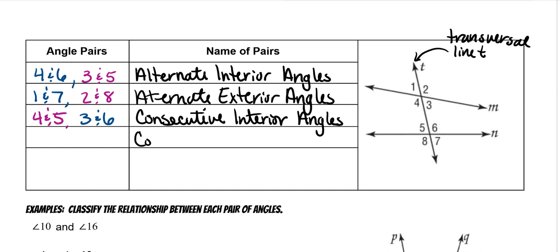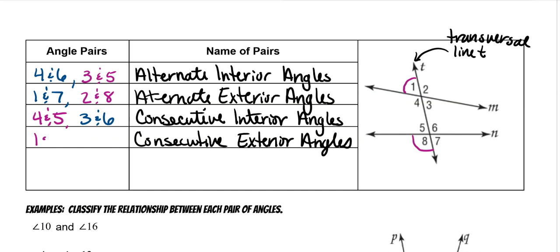Then we have consecutive exterior angles, which means they're going to be on the outside but on the same side. The pairs are angles one and eight, and angles two and seven.